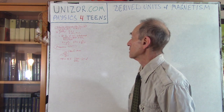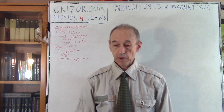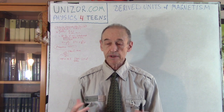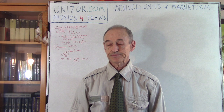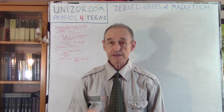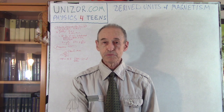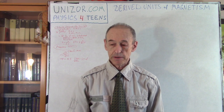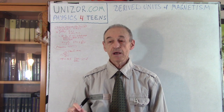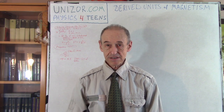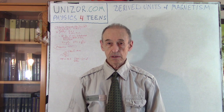Let's go to magnetism. Magnetism is related to the concept of a field — a magnetic field in this case. More precisely, it's an electromagnetic field, but that was covered in the corresponding lectures. Right now we're talking only about certain characteristics, more precisely the magnetic characteristics of the field, and how they can be measured.